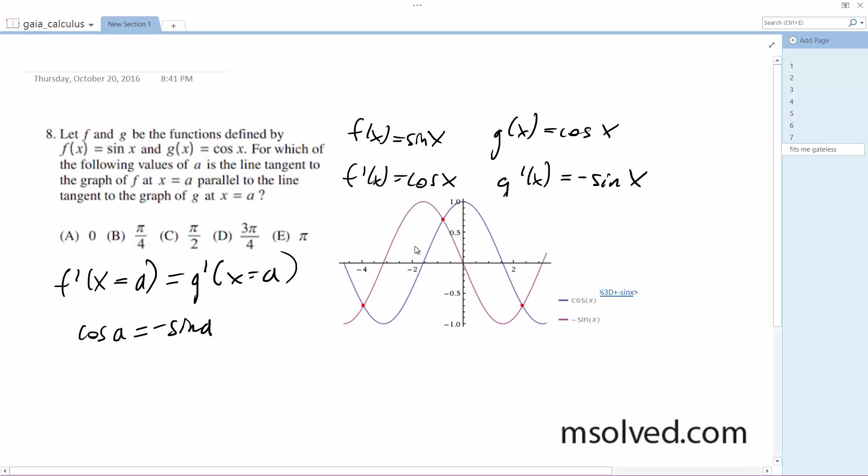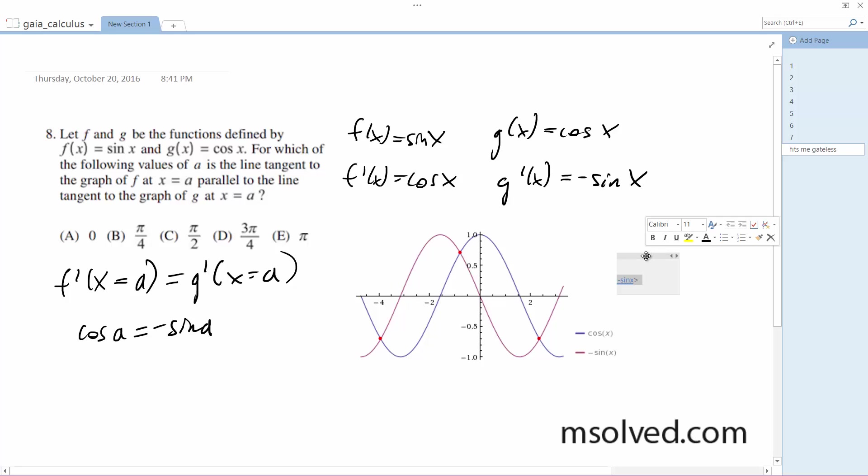I've got this graph here from Wolfram Alpha. When you graph these, they line up in a few different areas. But here, if you notice,